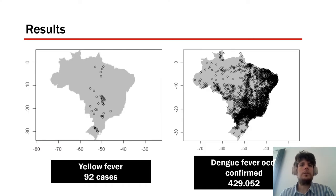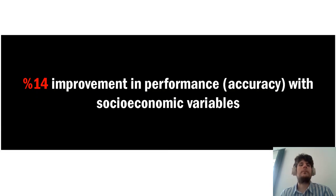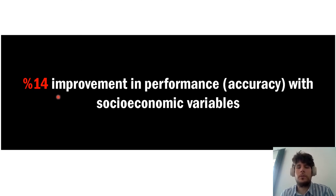Just to have a quick look at the difference between sample sizes: at yellow fever, we had 92 cases, while dengue had more than 400,000 cases. Our main result is that models had a 14% improvement in performance when they included socioeconomic variables compared to models with only environmental variables.